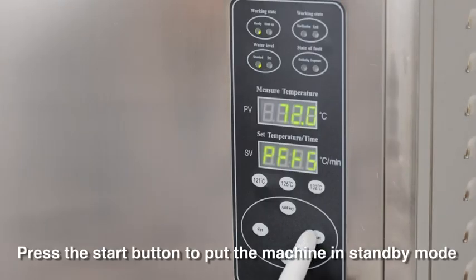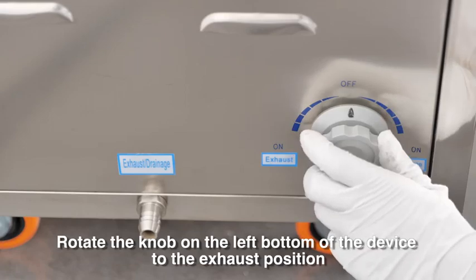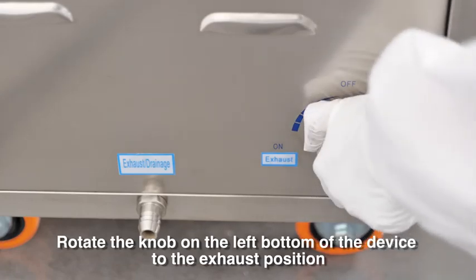Press the Start button to put the machine in standby mode. Press it again to initiate the heating process. Rotate the knob on the left bottom of the device to the exhaust position.